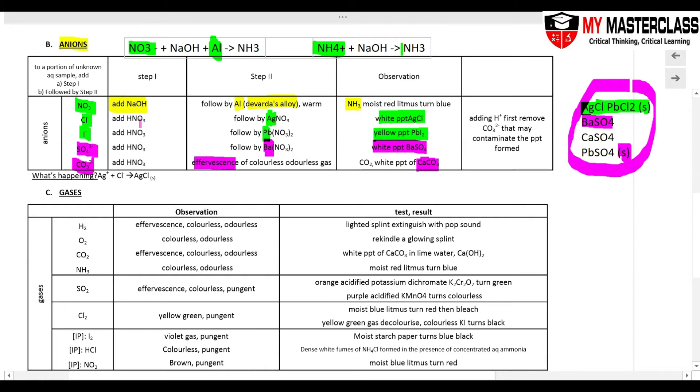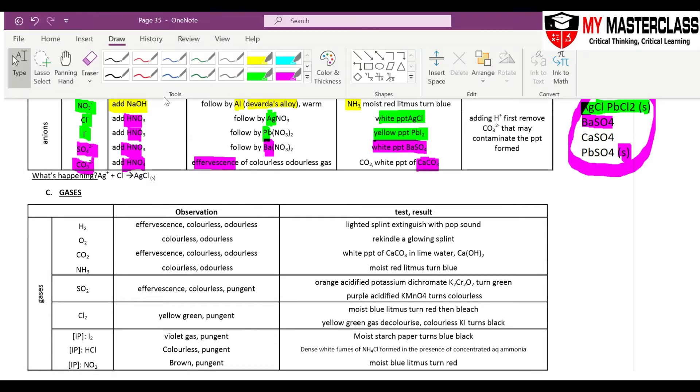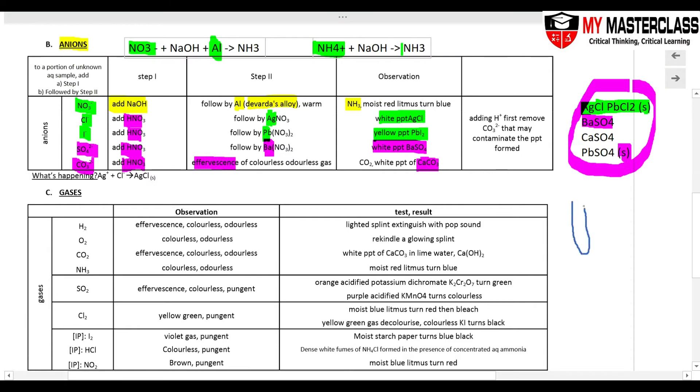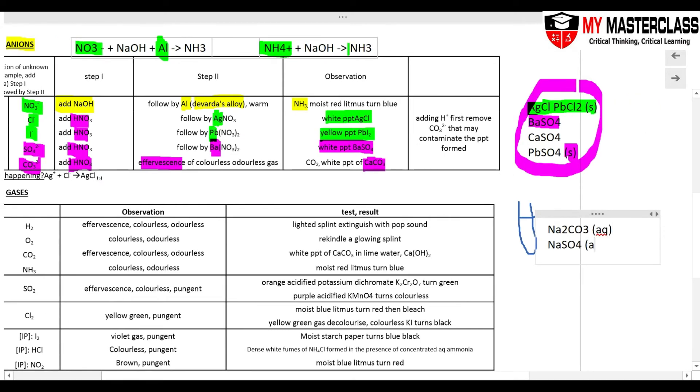And then if you look at all these steps, the step one, I'm actually adding in the acid. So why do I need to add the acid? It's because if, for example, I have an unknown solution. This unknown solution could be, for example, sodium carbonate. Because these sodium salts are soluble, sodium carbonate is soluble in water. Or it could also be sodium sulfate. It is aqueous, it is soluble, it could be an unknown solution. Sodium sulfate could be an unknown solution also.